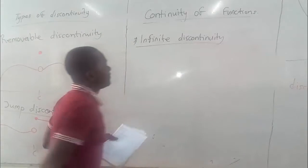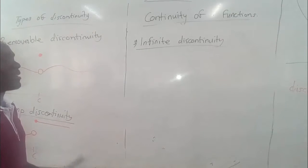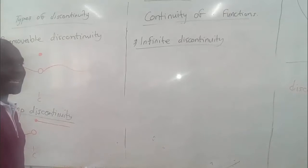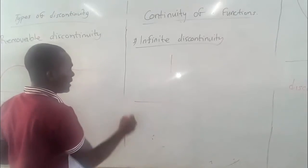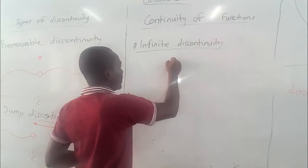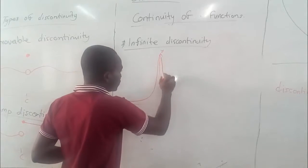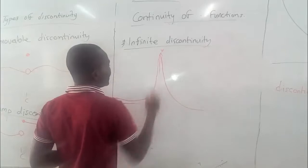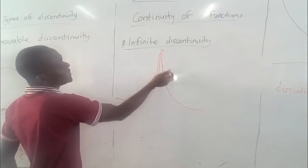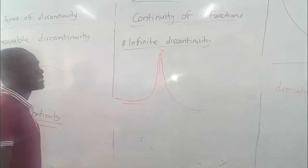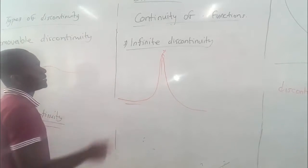The last type is infinite discontinuity. For infinite discontinuity, the lines or graphs are discontinuous all the way to infinity. For example, the graph moves toward the y-axis but never touches it — it moves to infinity. We call that kind of graph asymptotic to the y-axis. We talk more about asymptotes in algebra. That's how the graph of an infinite discontinuity looks.